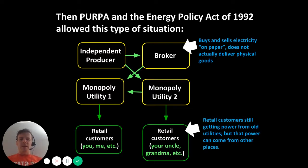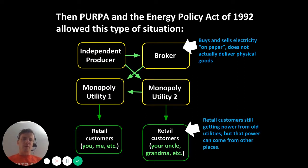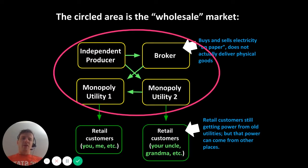You had the presence of independent power producers — both qualifying facilities and other non-QF independent power producers — able to own and operate generating facilities and sell electricity directly to the monopoly utilities, who would then deliver it to retail customers. You also had brokers that might buy electricity from an independent power producer and sell it for a little more to a monopoly utility. And monopoly utilities could buy and sell electricity from each other. The interactions between independent power producers, brokers, and the different monopoly utilities is what we refer to as the wholesale market.